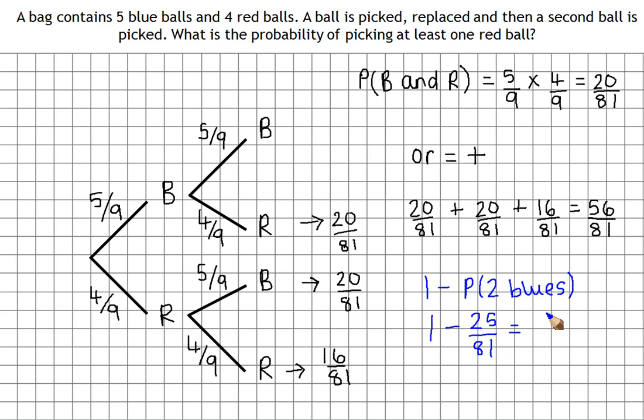So again, that's going to give us 56 over 81. So two ways to tackle the same question. They both give us the same answer of 56 over 81.